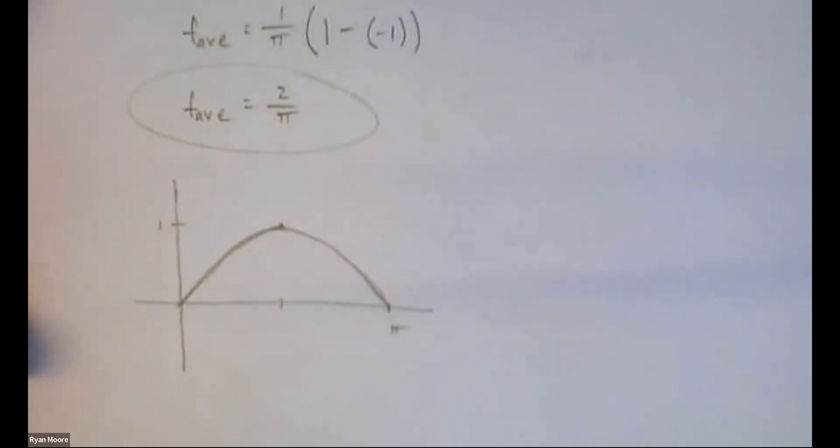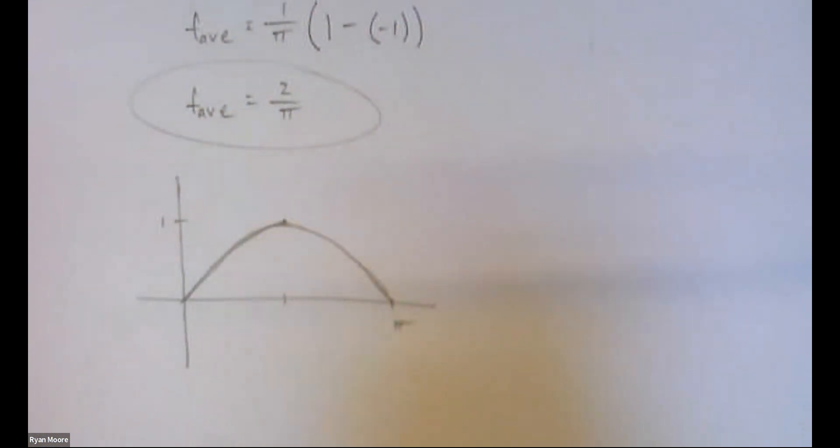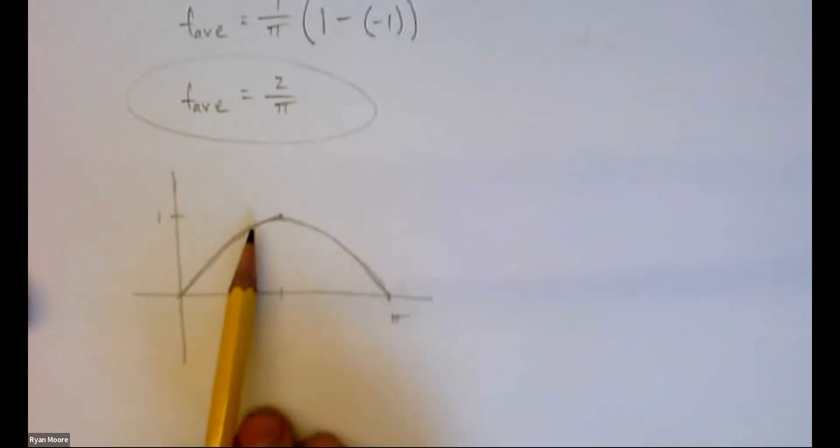Notice that for sine x, it stays near the top quite a bit longer than it stays near the bottom. Because it rounds out there, it's up, you know, if you were to think like, what's the halfway point? It gets to 0.5 relatively quickly, and then it stays above 0.5 for quite some time before it drops back below. So that makes the average higher. Pi over, excuse me, 2 over pi.